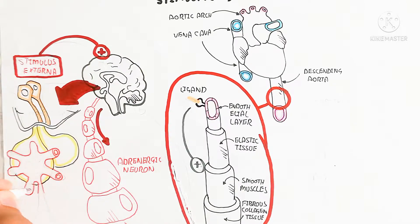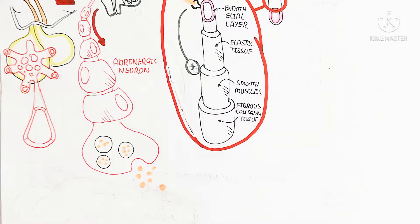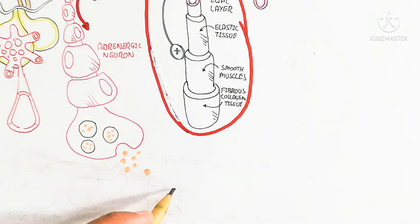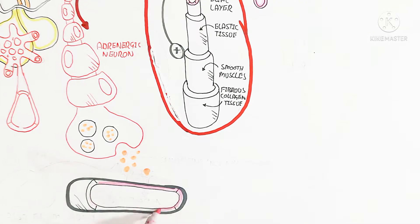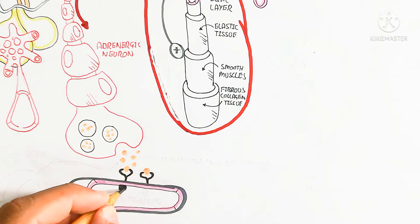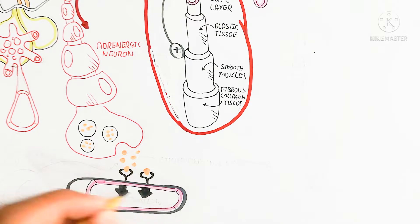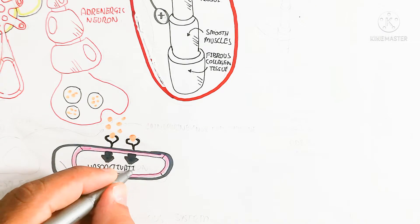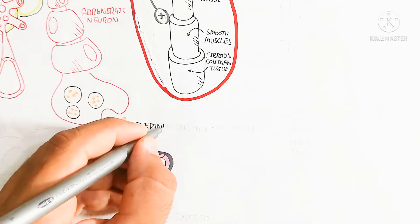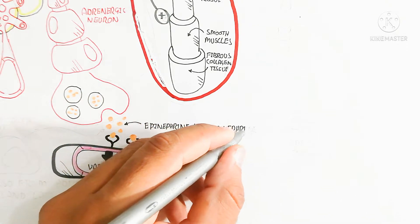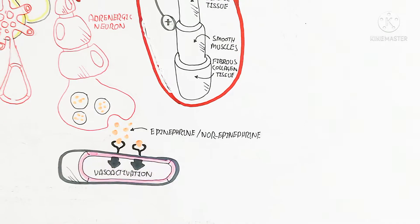This is the pituitary gland, which is part of endocrinology. The adenohypophysis will secrete ACTH. The neurotransmitter first binds with the epinephrine and norepinephrine receptors. When epinephrine binds, vasoconstriction will occur, and blood pressure will be increased due to sympathetic activity — for example, the fight-and-flight response.